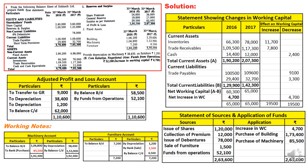The increase in working capital is ₹4,700. This is written in the decrease column to make the statement tally, and then recorded as an application of ₹4,700 in the main statement. When we close the adjusted P&L account, the balancing figure on the credit side is 'funds from operations,' which is always a source. Finally, our statement of sources and application tallies at ₹2,63,600.